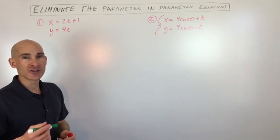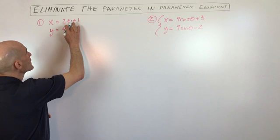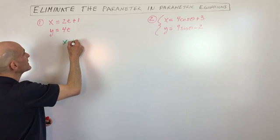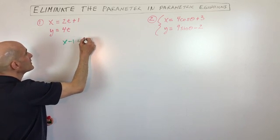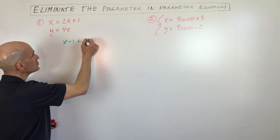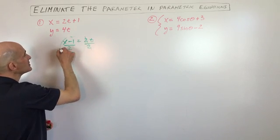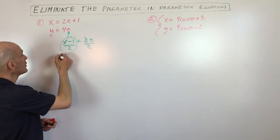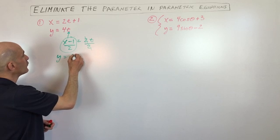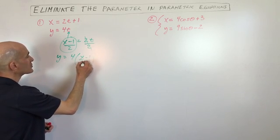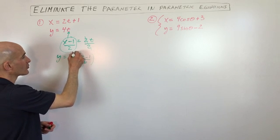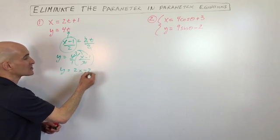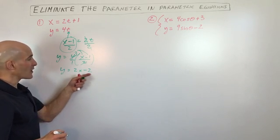In this first example, we're going to solve for t in the top equation by getting t by itself. Subtracting 1 gives us x minus 1 equals 2t, then dividing by 2 gives t equals (x minus 1) over 2. Substituting into the second equation: y equals 4 times (x minus 1) over 2. The 4 and 2 cross-reduce, and distributing gives us y equals 2x minus 2.